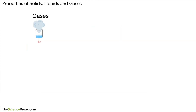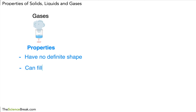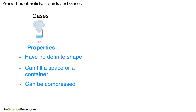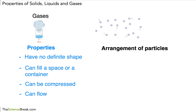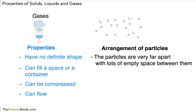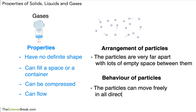Let's do gases. The properties of gases include that they have no definite shape — they can fill a space or a container, not just sit at the bottom of it. They also can be compressed, and they can flow just like liquids. In terms of the arrangement of particles, the particles are very far apart with lots of empty space between them. In terms of the behavior, the particles move freely and in all directions.